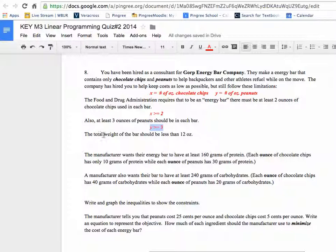The total, that's combining our x's and our y's, has to be less than 12. Can't make it too big. So we're going to write x plus y is less than or equal to 12 ounces.